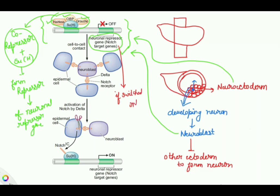There are only two possible outcomes: a cell becomes a neuroblast or an epidermal cell. When the neuronal repressor gene is switched on, it starts repressing neuroblast formation, and hence the cell becomes an epidermal cell. Now how does this happen, and what is the role of Delta-Notch signaling?